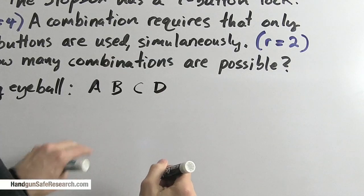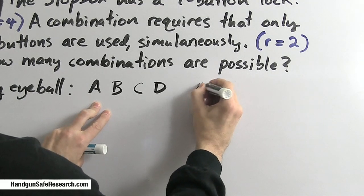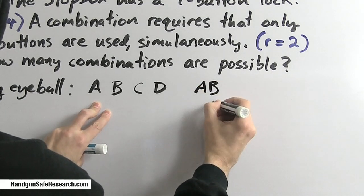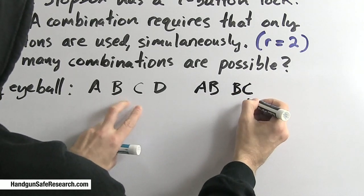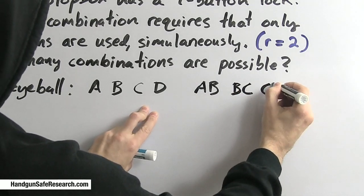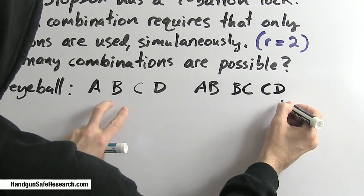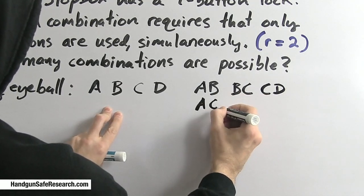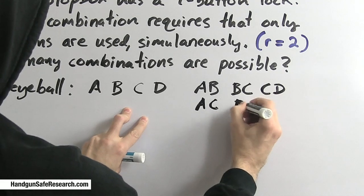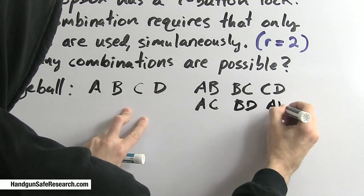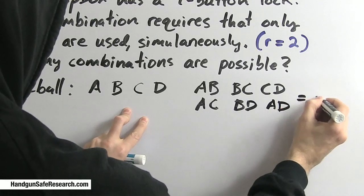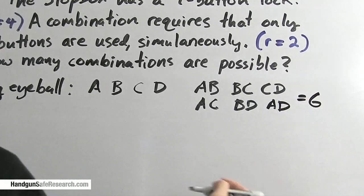What are my options? I can press A and B together, B and C, C and D, A and C, B and D, and A and D. Six possible combinations.